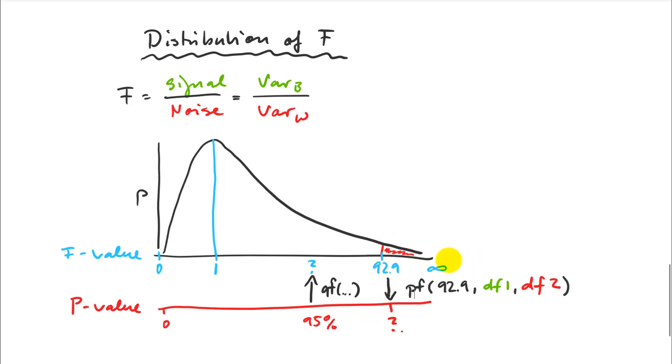So if I have calculated a signal to noise ratio, I can calculate what's the probability of getting a bigger value just by random chance. And one minus that, that's the p-value, so that's the probability that I'm wrong about my statement that there is a difference among those means.